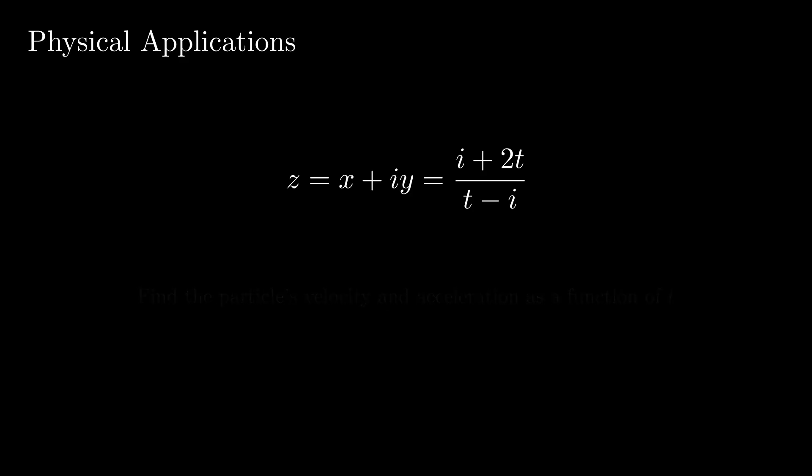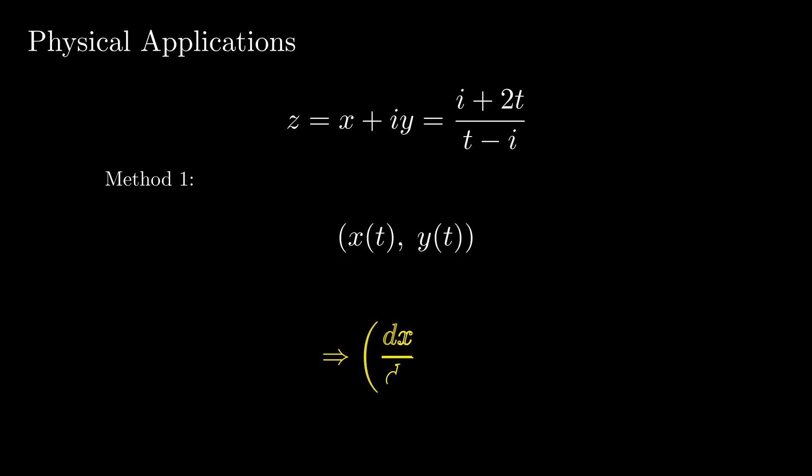Let's try to find the magnitude of its velocity and acceleration as a function of t. We could write z in x plus iy form, and get the x and y components as a function of t. Then we could just take the derivatives, and go from there.